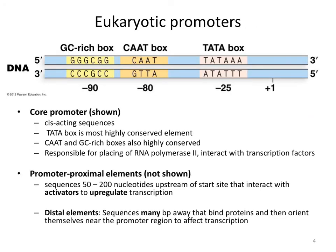Shown here is a cartoon depicting a typical eukaryotic promoter. You should notice similarities with the promoters of prokaryotes — for example, particular consensus sequences that occur immediately upstream of the plus-one site. The plus-one site signifies the first nucleotide transcribed into RNA, so that's where transcription really begins. The consensus sequences shown include the GC-rich box, the CAAT box, and the TATA box. These are common elements seen in most, although not all, eukaryotic promoters, and their positioning relative to the plus-one site is shown as well. All of that taken together is referred to as a core promoter.